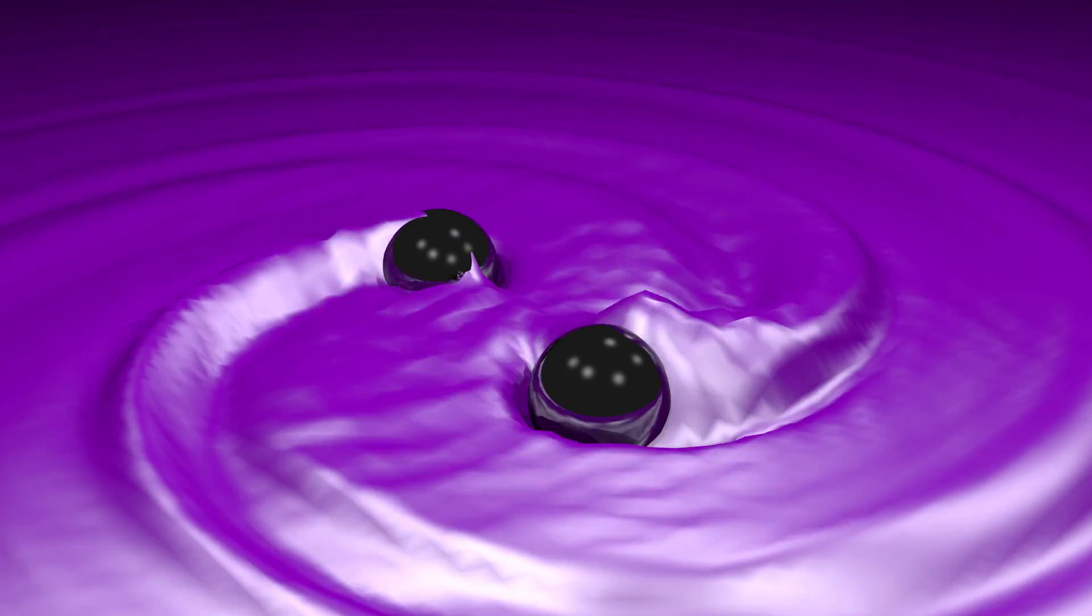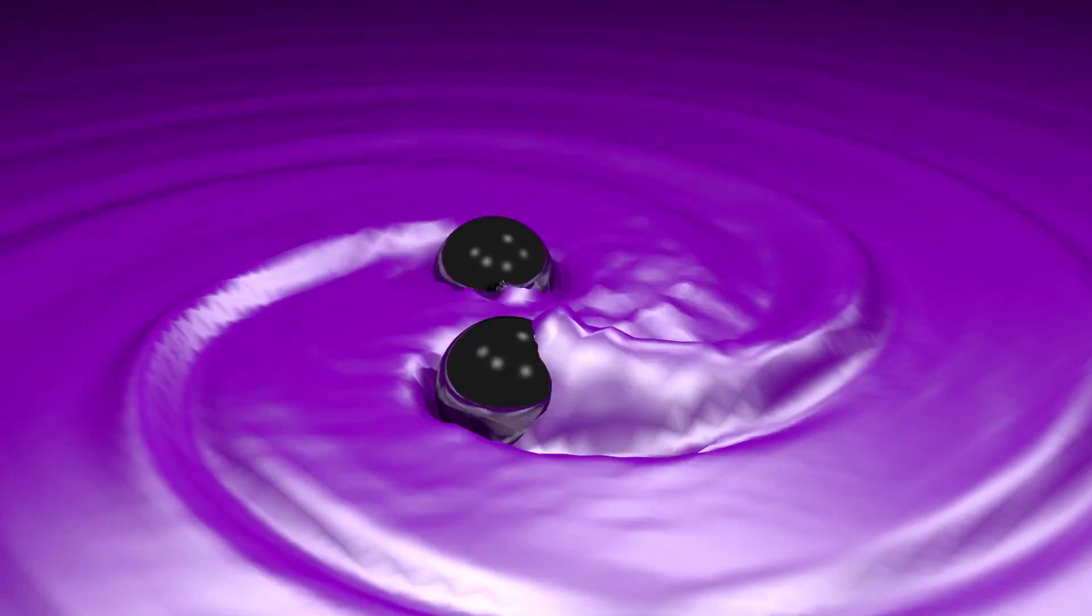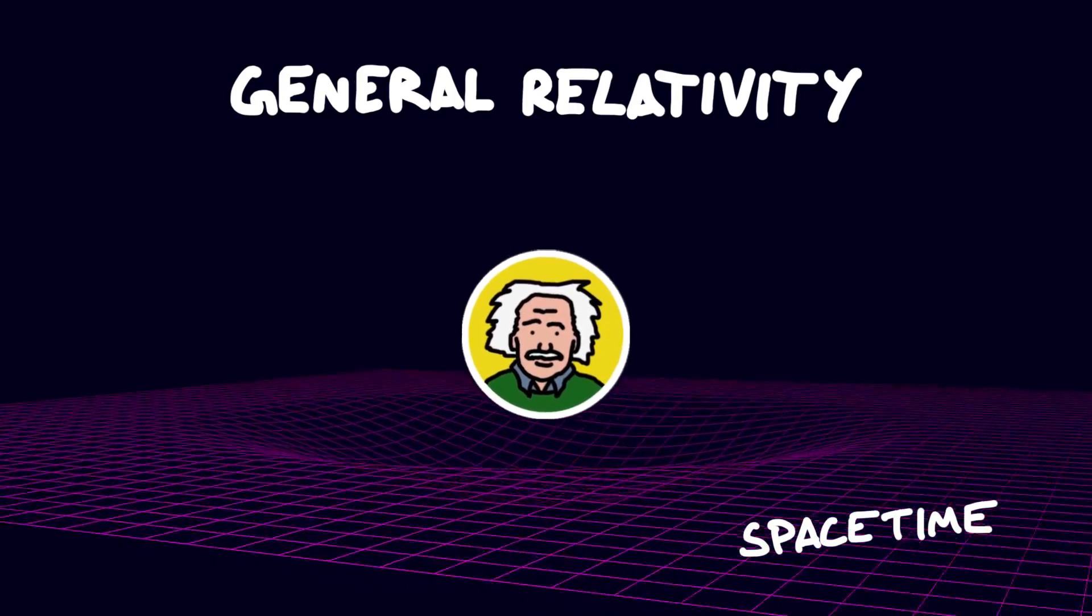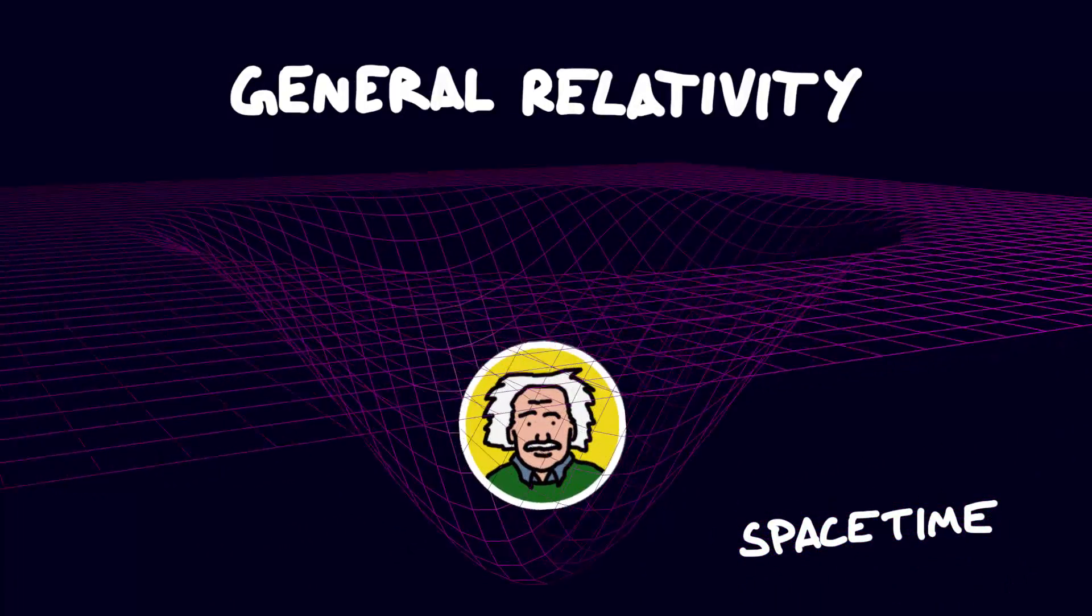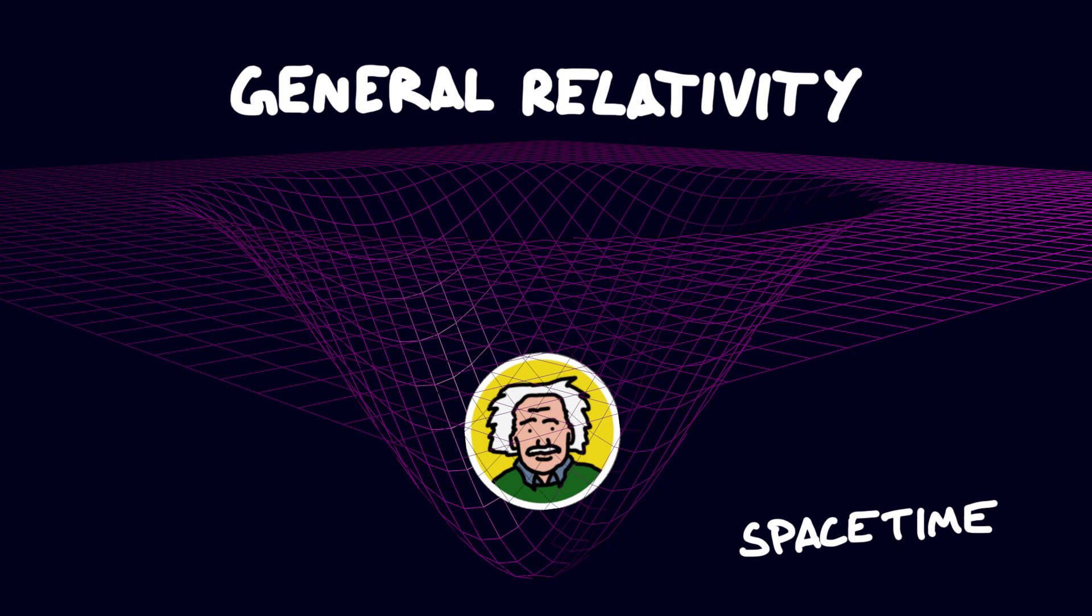Gravitational waves are ripples in the fabric of space-time, predicted by Einstein's laws of general relativity. But they're incredibly difficult to detect. To see them you need a detector that can accurately measure distances 10,000 times smaller than a proton.